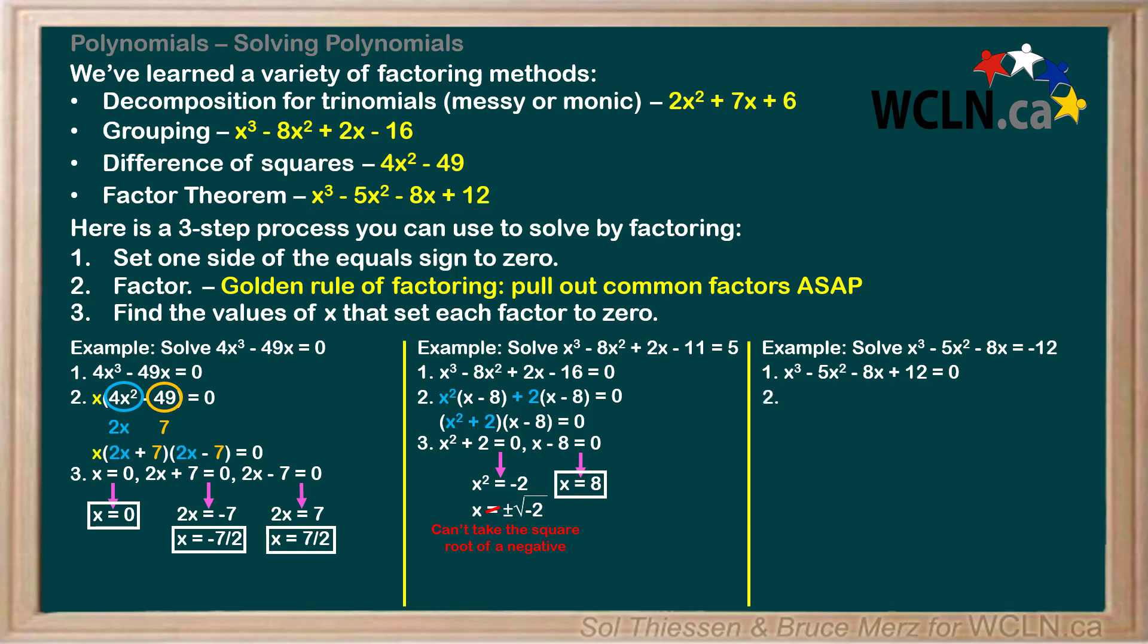In step 2, which is to factor, we'll start by testing values of x to find a root and a corresponding factor. To start, let's test x = 1. Substituting 1 in for all the x's gives us 1³ - 5(1)² - 8(1) + 12, which does evaluate to 0. This means that x = 1 is a root and x - 1 is a factor. Now we have to divide x³ - 5x² - 8x + 12 by the factor we found, x - 1.